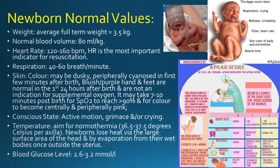It may take 7 to 10 minutes post birth for SATs to reach greater than 90% and for colour to become centrally and peripherally pink. Conscious state: active motion, grimace and/or crying. Temperature: aim for normothermia, 36.5 to 37.5 degrees Celsius per axilla. Newborns lose heat via the large surface area of the head and by evaporation from their wet bodies once outside the uterus. Blood glucose level: 2.6 to 3.2 millimoles per litre.